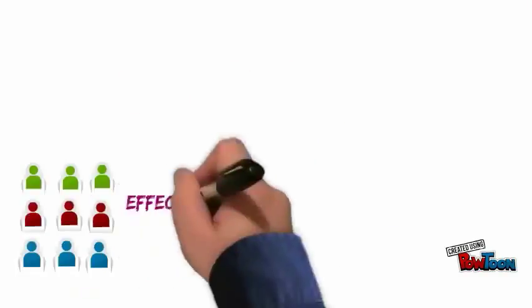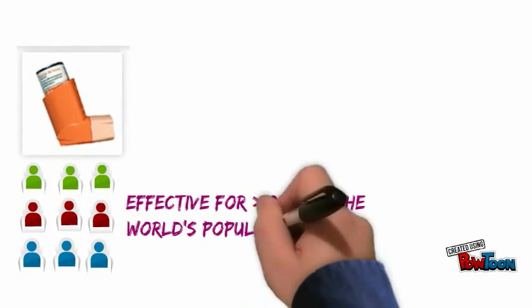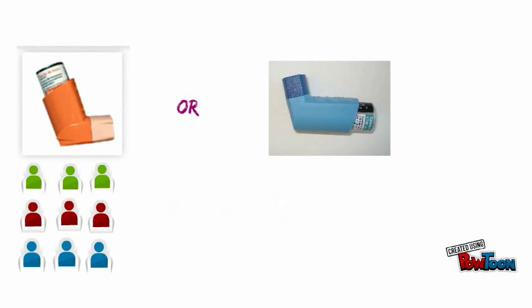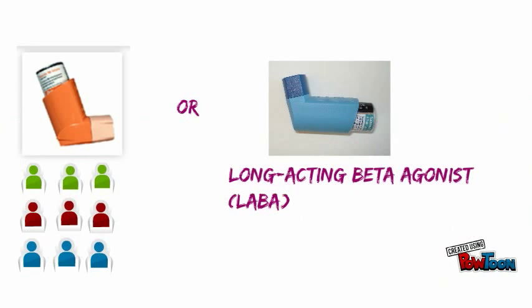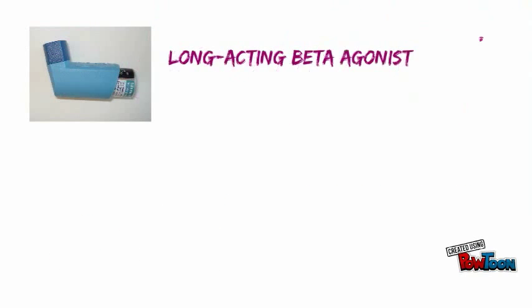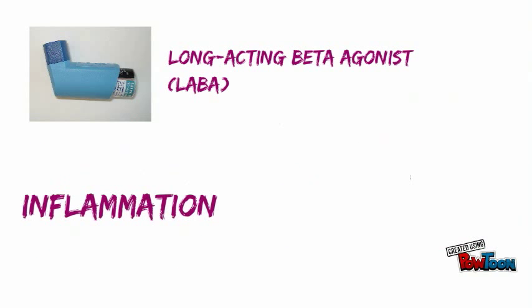There are treatments available for asthma. For greater than 90 percent of the world's population living with asthma, the standard corticosteroid inhaler — or the inhaler used in combination with a long-acting beta agonist, or LABA — is enough to treat symptoms. It is important to understand that LABA must be used in combination with the corticosteroid, because the core issue is inflammation, which LABA does not act upon.